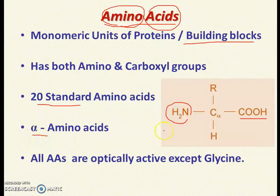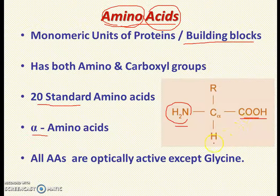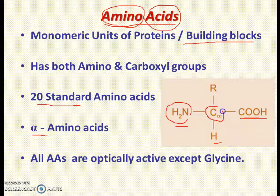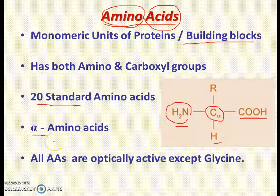What is meant by alpha amino acids? Let's see the general structure again. This is the general structure of amino acids where we have a central carbon to which both groups are attached: the carboxyl group, amino group, hydrogen, as well as the side chain. This carbon atom is called the alpha carbon atom, as it is just adjacent to the functional group. To the alpha carbon atom all different groups are attached — that is why the amino acids are called alpha amino acids.